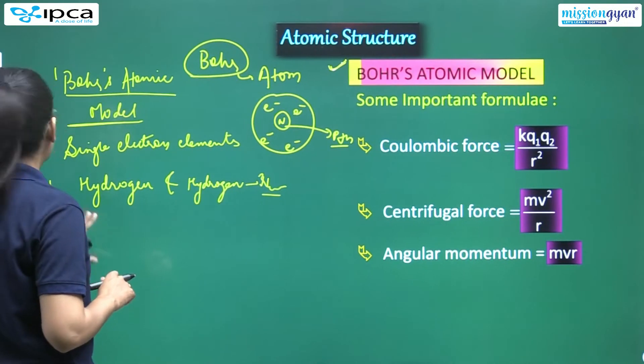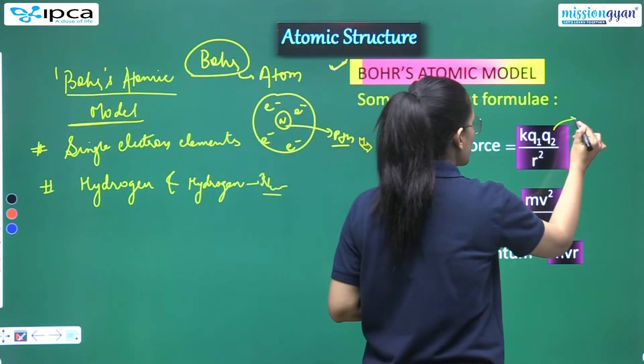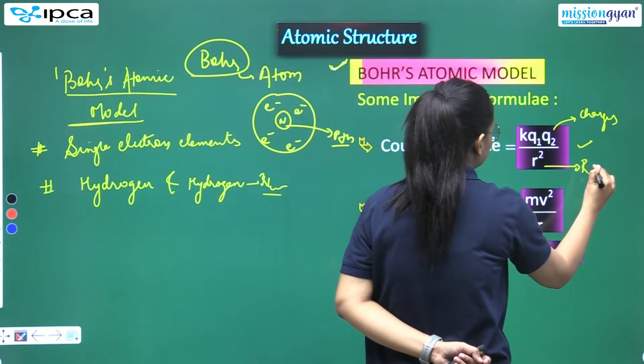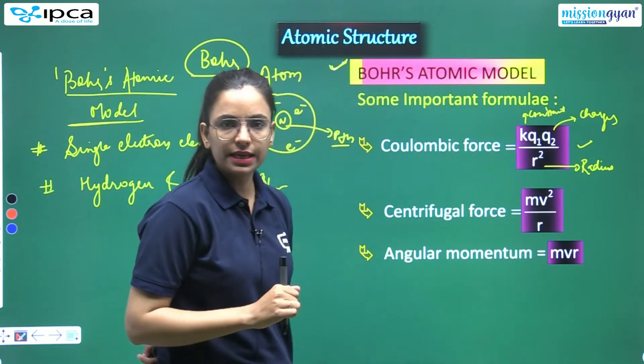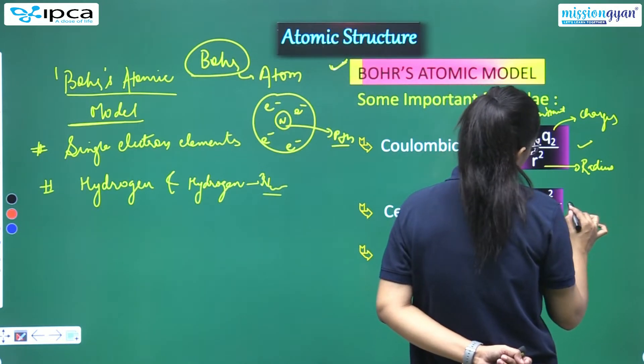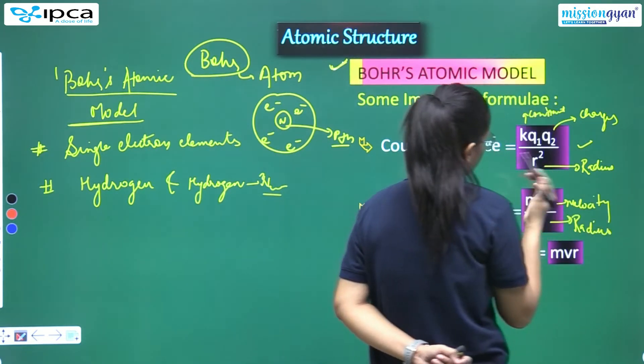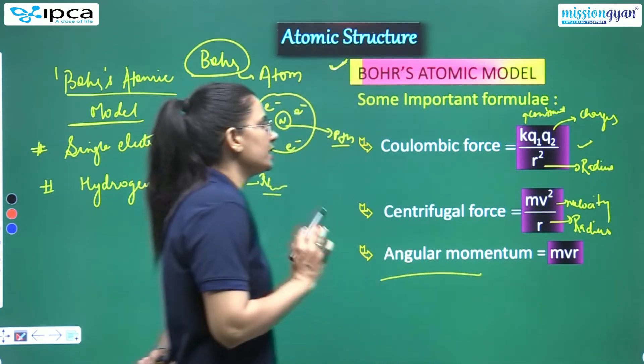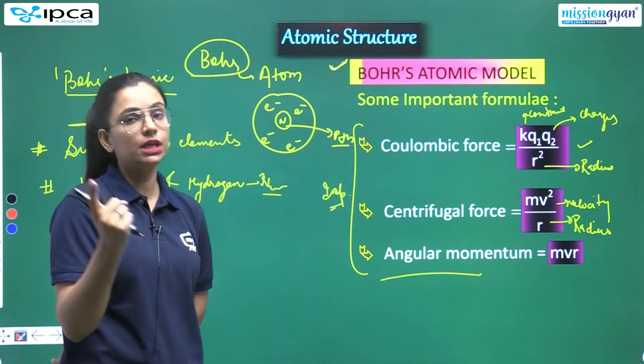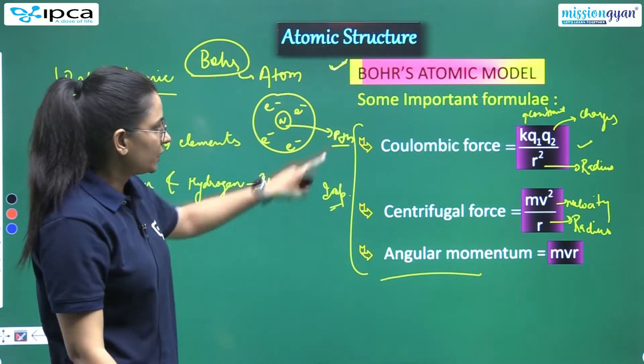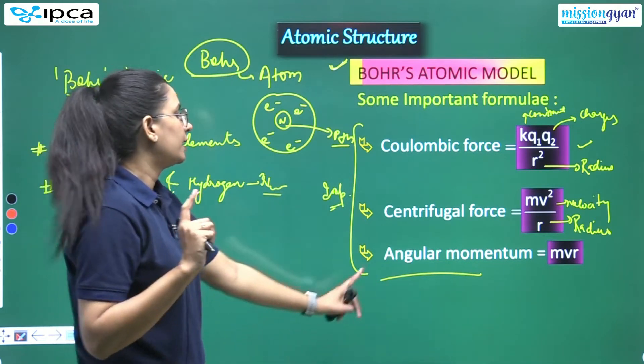First of all, I am telling you some important formulas which you will need to remember. Here I have written the formula: Coulombic force is K Q1 Q2 upon R square, where Q are the charges and R is your radii, and K is a constant. After that, centrifugal force is mv square by R, where v is your velocity, R is radius, and m is mass. And angular momentum is mvr. Remember these formulas - I will apply them in the distance and relate them to you.